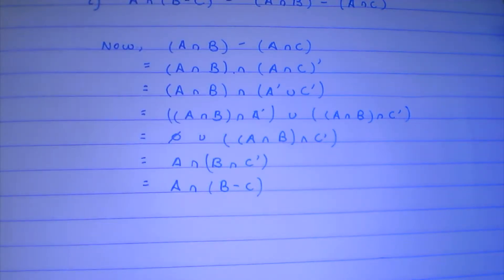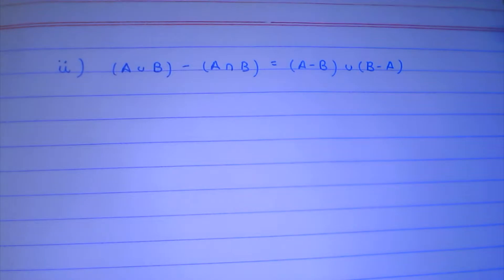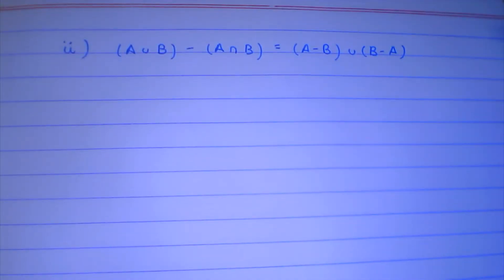Moving on to the next one, which is going to be really big. We have: A union B minus A intersection B, and that is equal to A minus B union B minus A. If you draw that in a Venn diagram all this inequality would be very clear, but we have to prove it analytically.